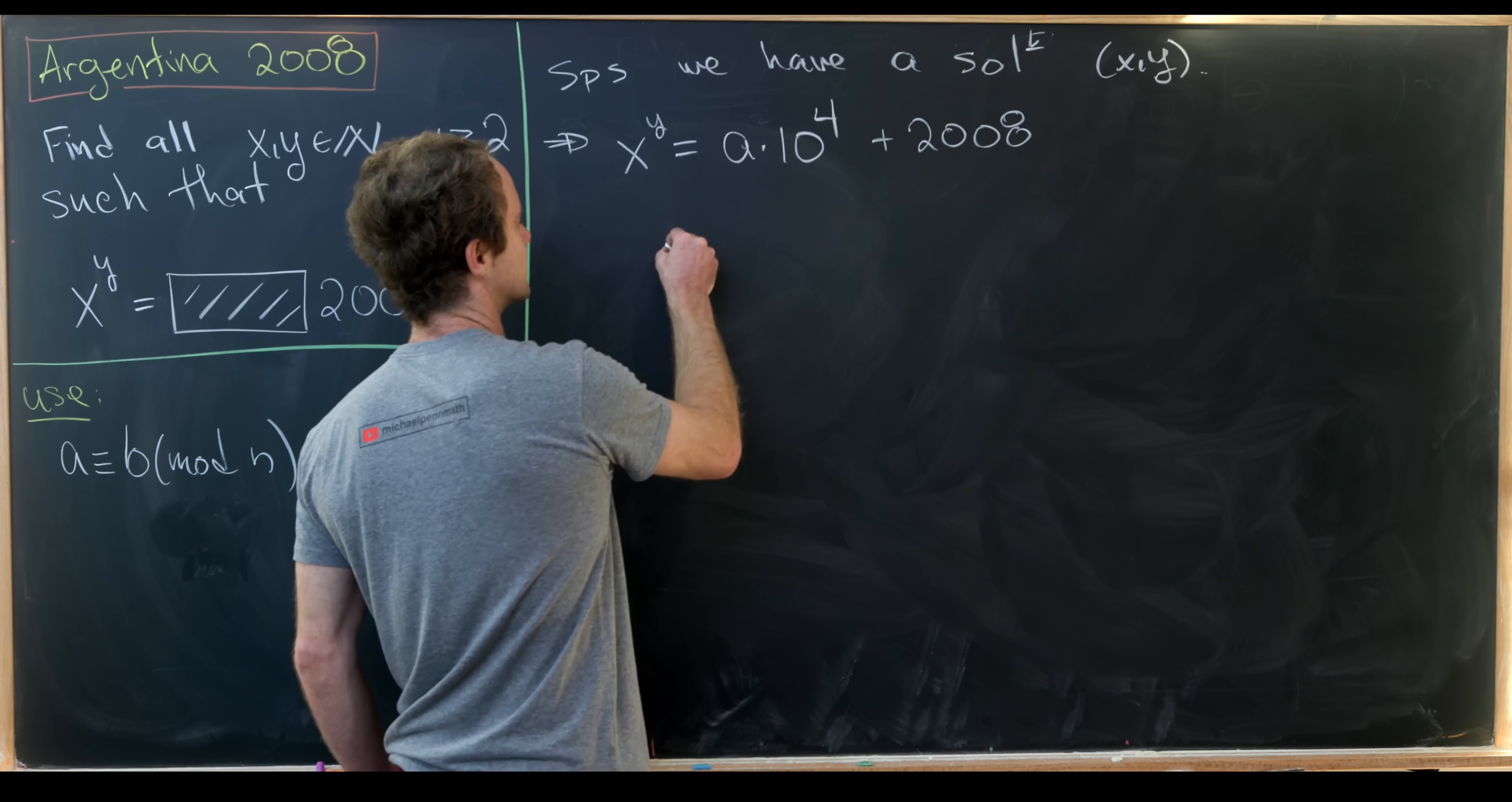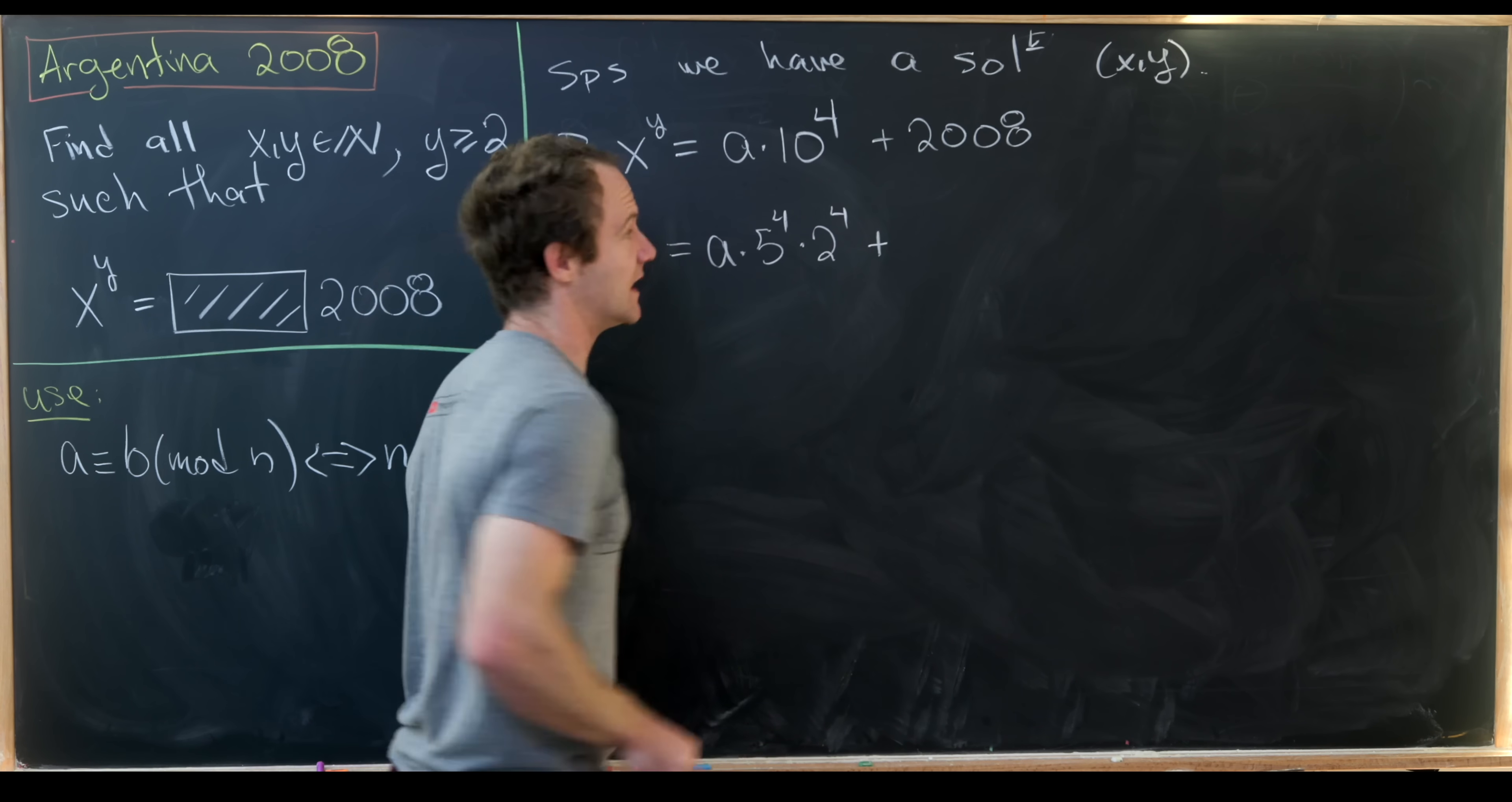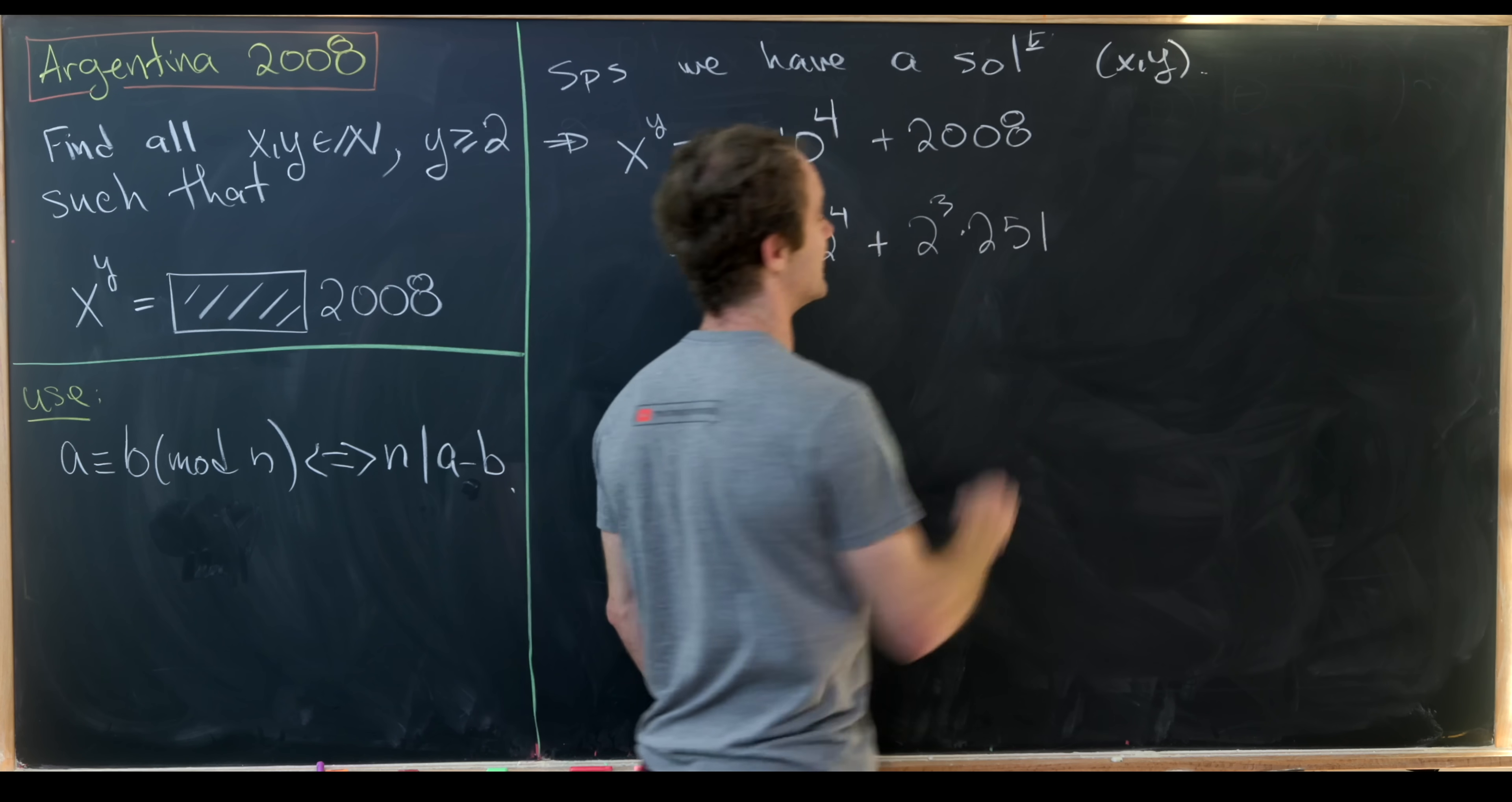Now let's factor these a little bit. So this is going to be some number times 5 to the 4 times 2 to the 4 plus then factoring 2008 that will be 2 cubed times 251.